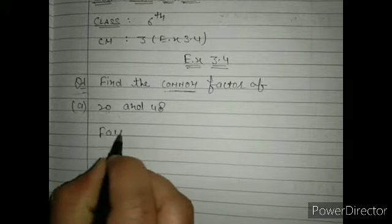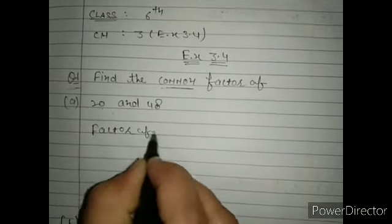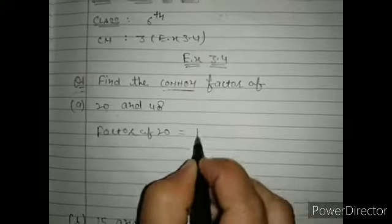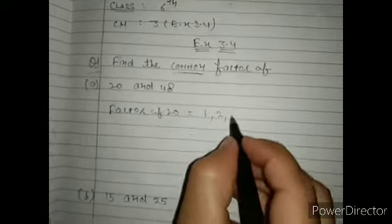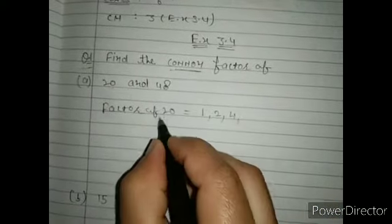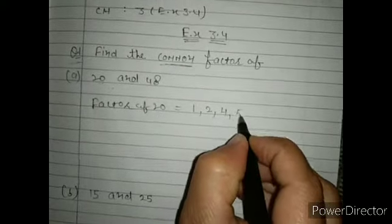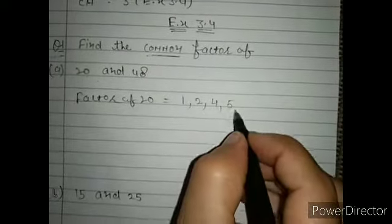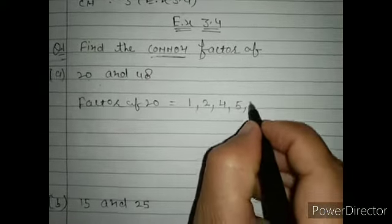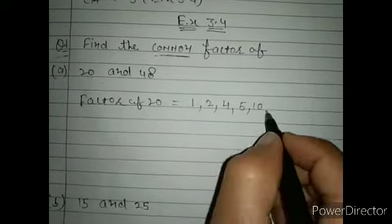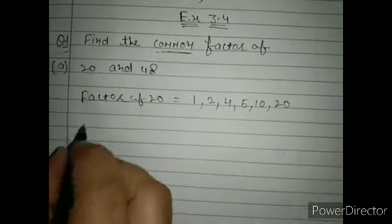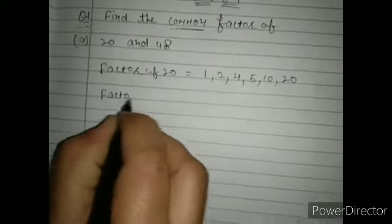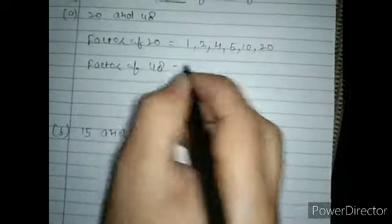To find the factors of 20, write: 1 divides 20, 2 divides 20, 3 does not divide, 4 divides, 5 divides, 6 does not, 7 does not, 10 divides, and 20 divides. So the factors of 20 are: 1, 2, 4, 5, 10, and 20. Now we will find the factors of 48.